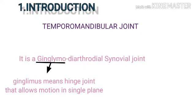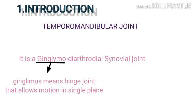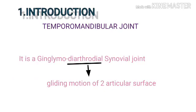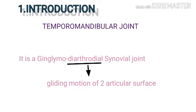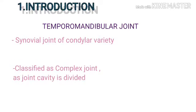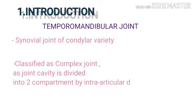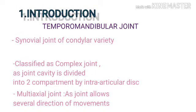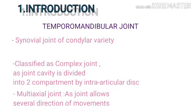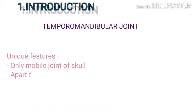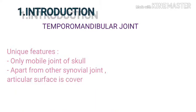It is a ginglymo-diarthrodial synovial joint. 'Ginglymos' means hinge joint, allowing motion in a single plane; 'diarthrodial' refers to gliding motion of two articular surfaces. It is a synovial joint of the condylar variety, classified as a complex joint because the joint cavity is divided into two compartments by an intra-articular disc. It is also a multi-axial joint, allowing movement in several directions.